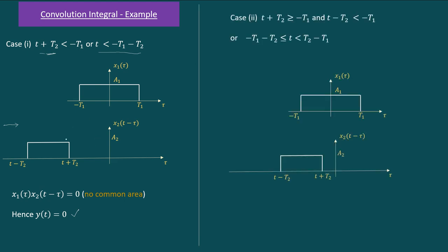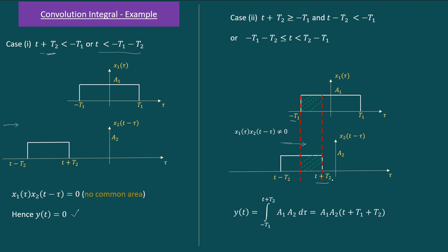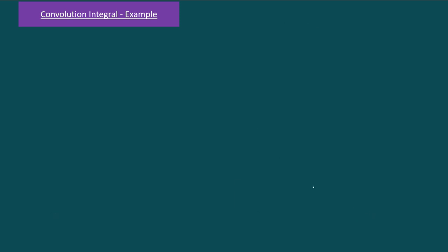In Case 2, we move the rectangular signal slightly into the first box. Now there is an overlap, and in that overlap region the product of the two signals is non-zero. The area of overlap exists from −t1 to t + t2. So y(t) = integral from −t1 to t + t2 of a1 · a2 dτ, which simplifies to y(t) = a1·a2·(t + t1 + t2).